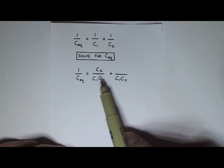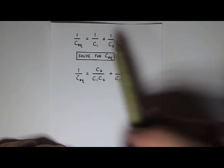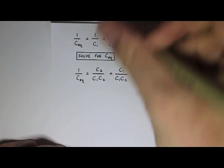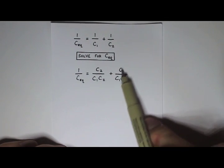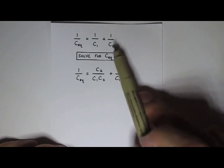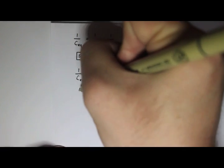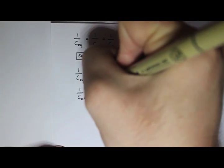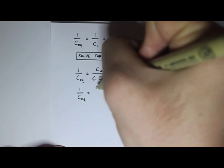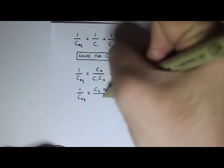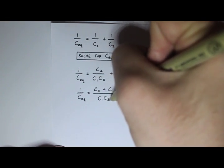You can imagine canceling out the c2s, and you'd be left with 1 over c1. And then similarly, over here, my numerator is going to be c1. You can imagine canceling out the c1s, and you'd be left with 1 over c2, which is what I started with. So I didn't really change anything yet. But now I can add them because they have the same denominator. So 1 over c equivalent equals c2 plus c1 divided by the common denominator of c1 c2.